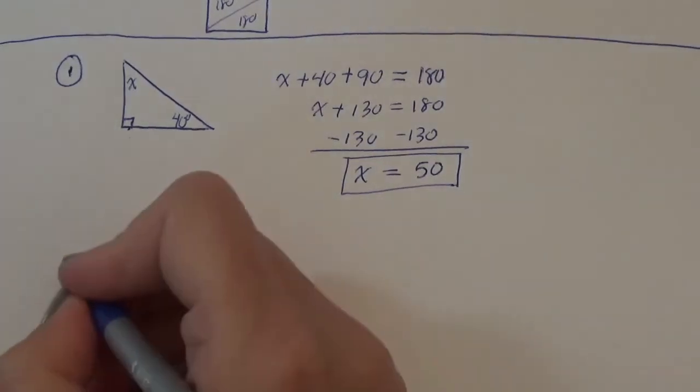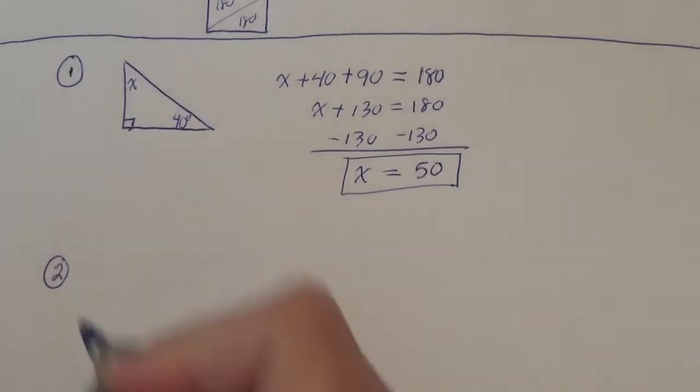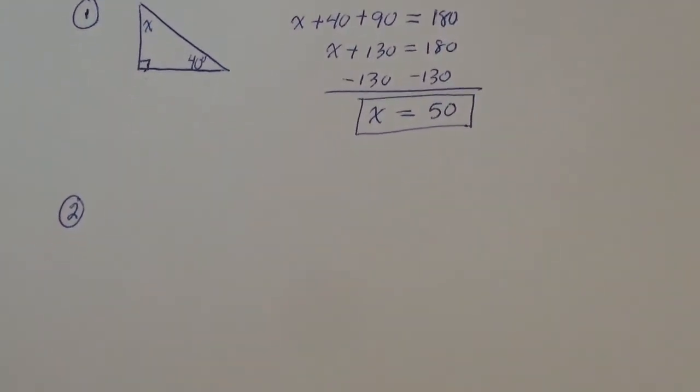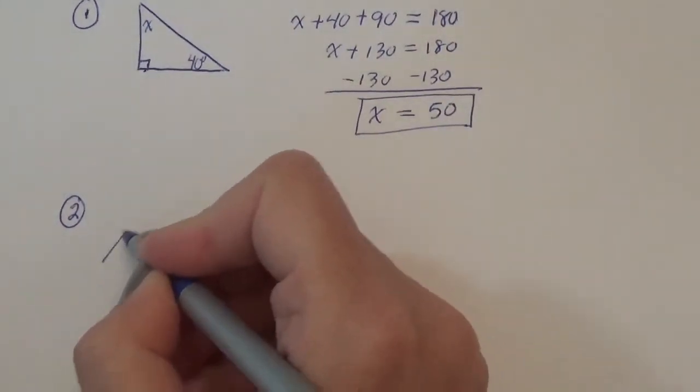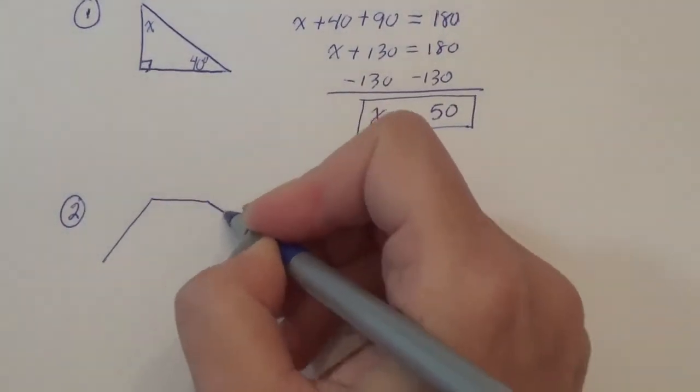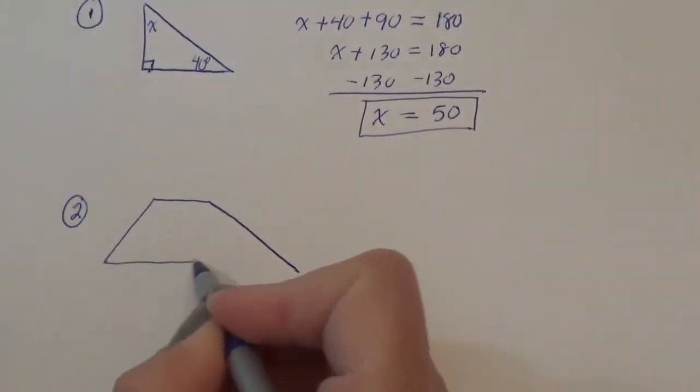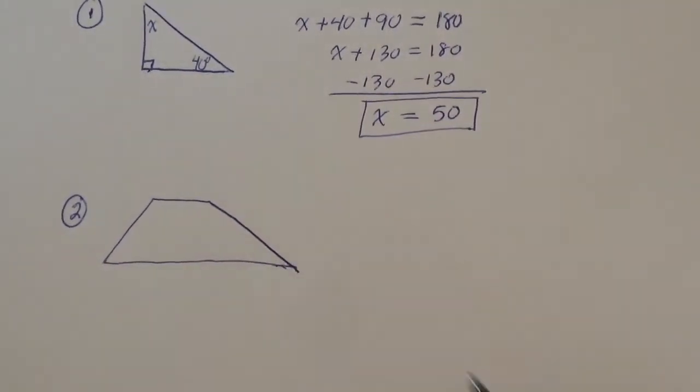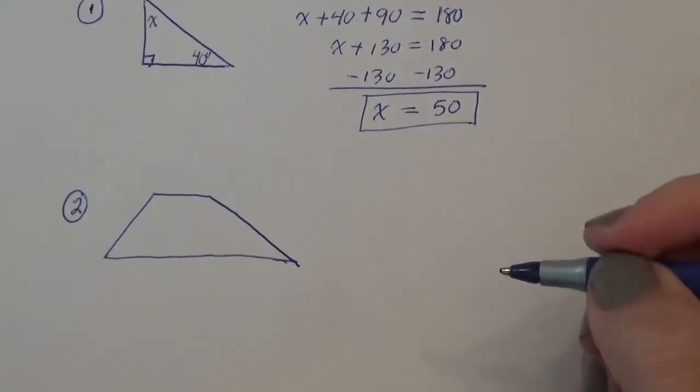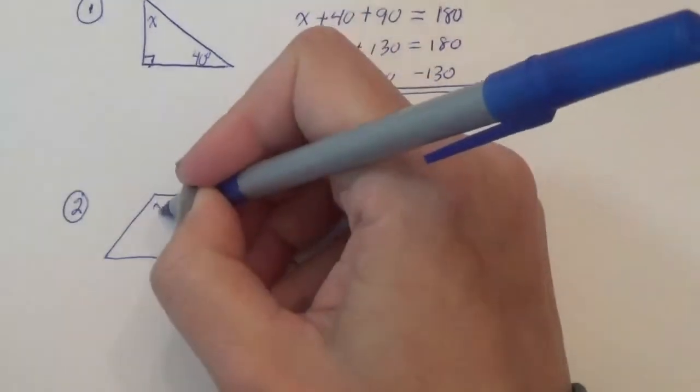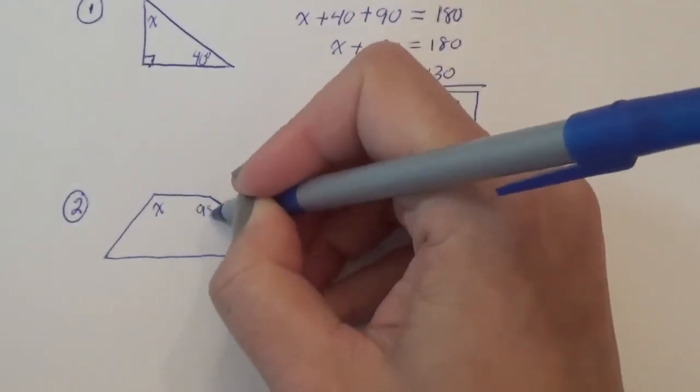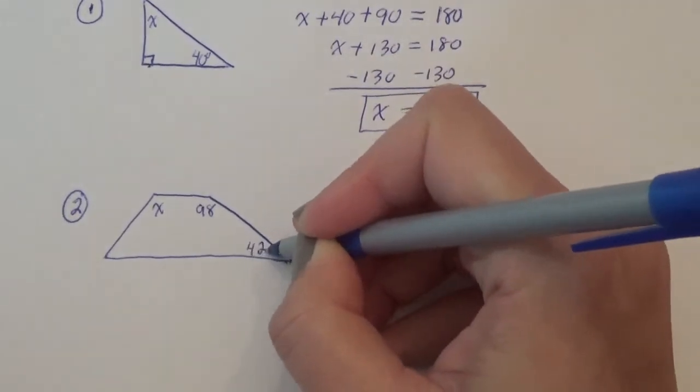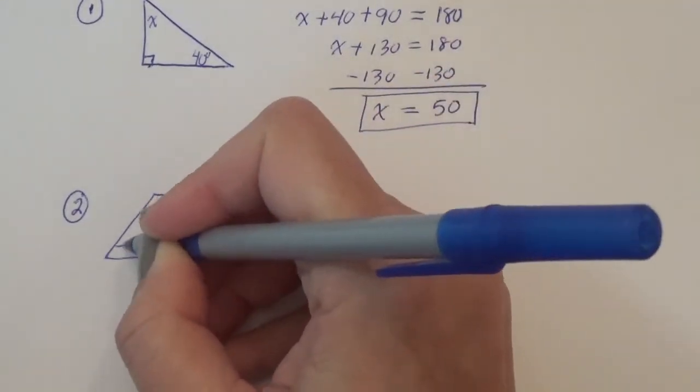Okay. So that's how tonight's homework or practice is going to go. Let's do one with a four-sided shape. Let's try, I don't know, kind of an elongated trapezoid. Let's see. Let's say this is x, 98, 42, and 70.